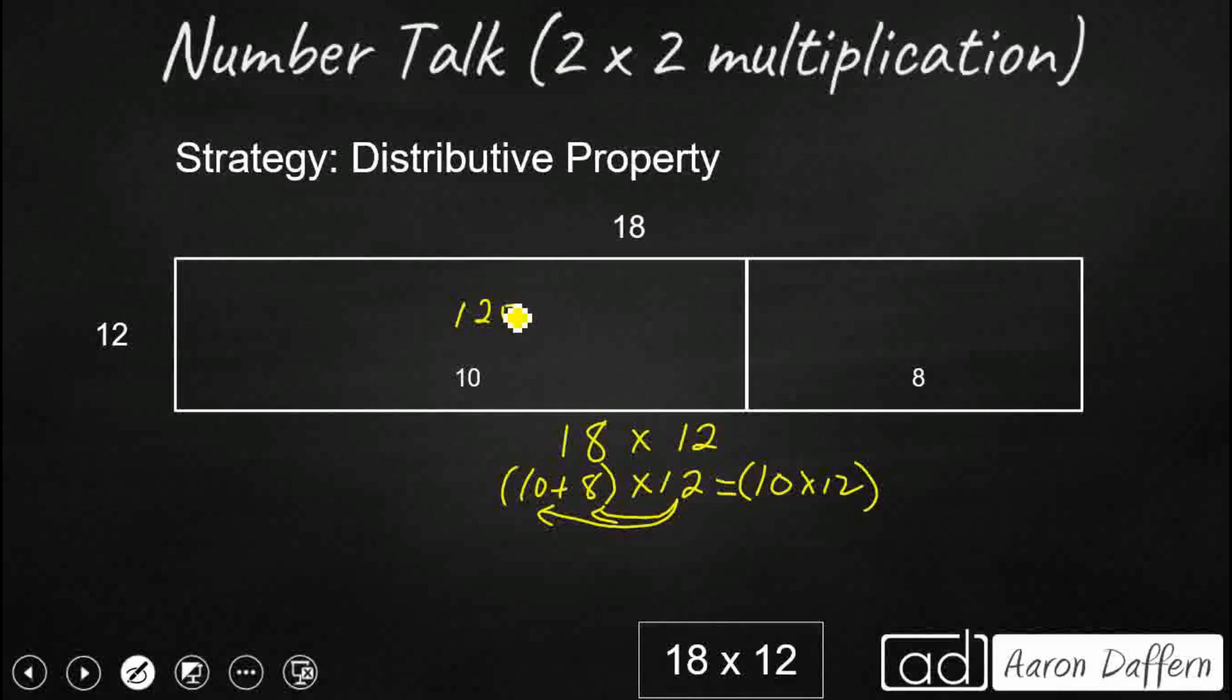So that's easy. That's 12 with a 0, 120. And then we're going to get our 8 times 12. And that's going to once again be our 96. We've got our 120 and 96. Put those together and you have your 216.